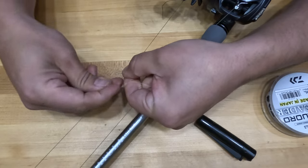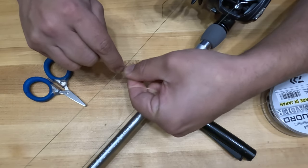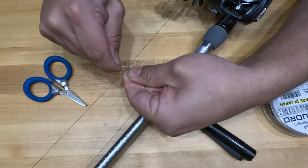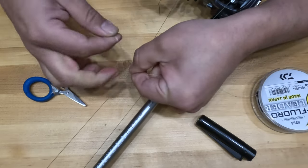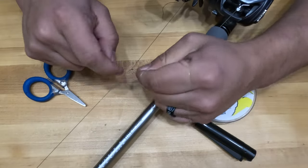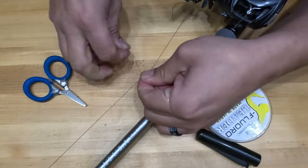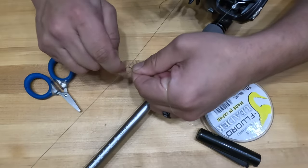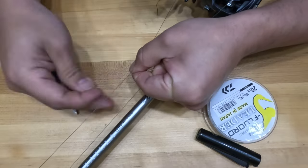Now what you're essentially doing is creating a Chinese finger trap that when pulled will grip onto the fluorocarbon, creating a strong connection and one that won't break. The more loops you make, the longer your Chinese finger trap will be and the more weight is distributed across the tension of the line when you go to hook set.